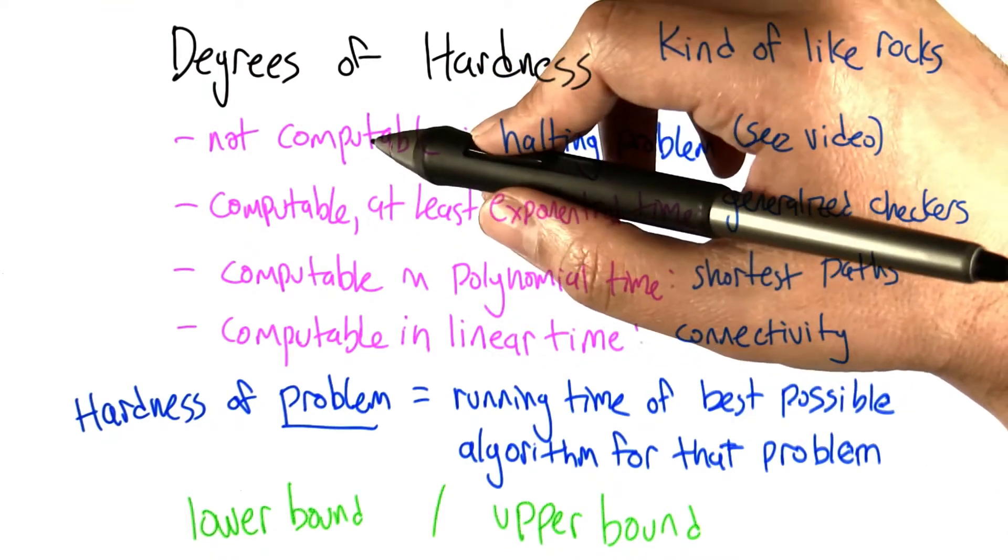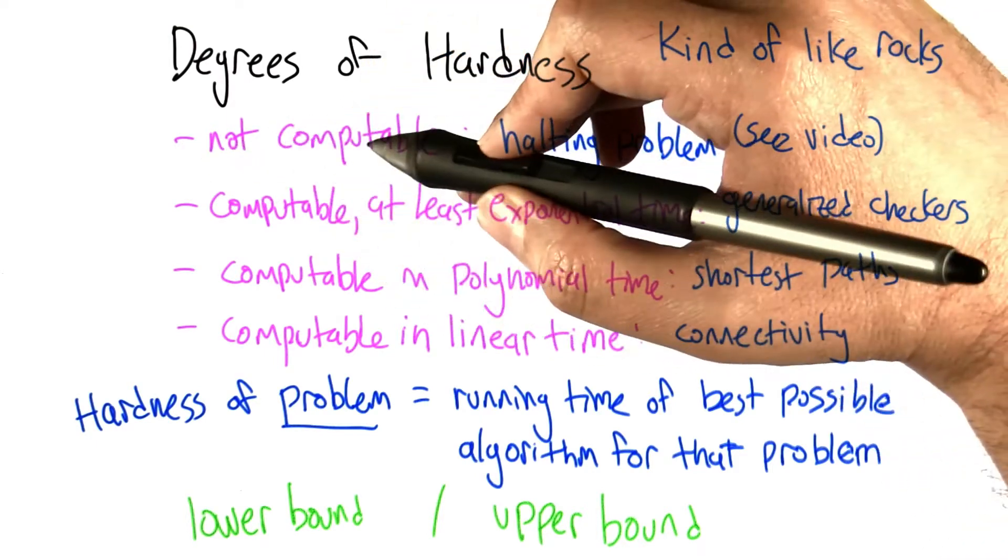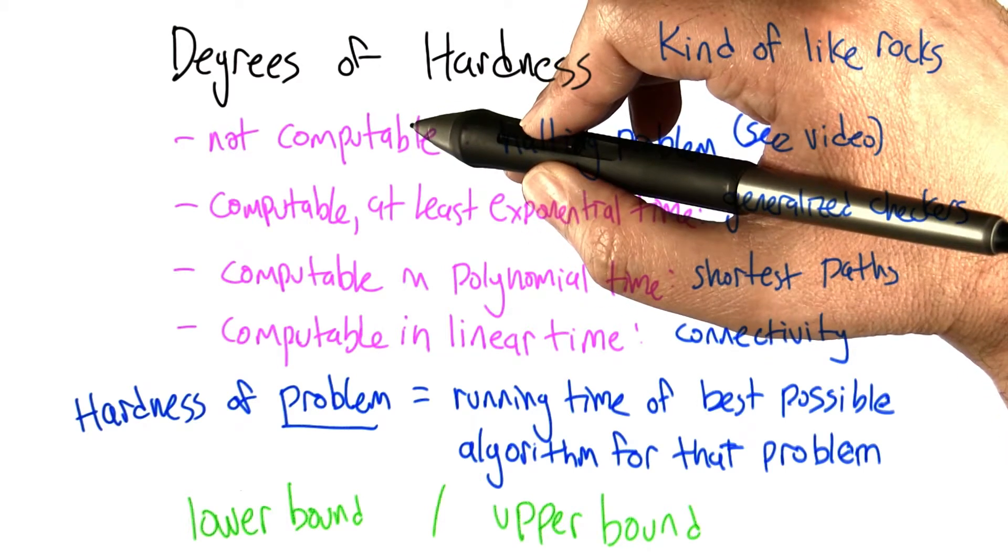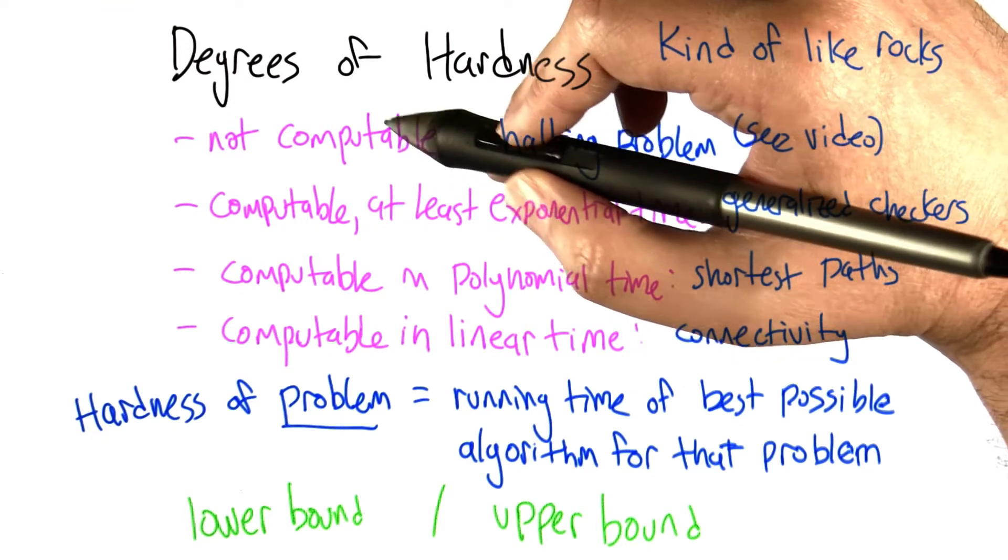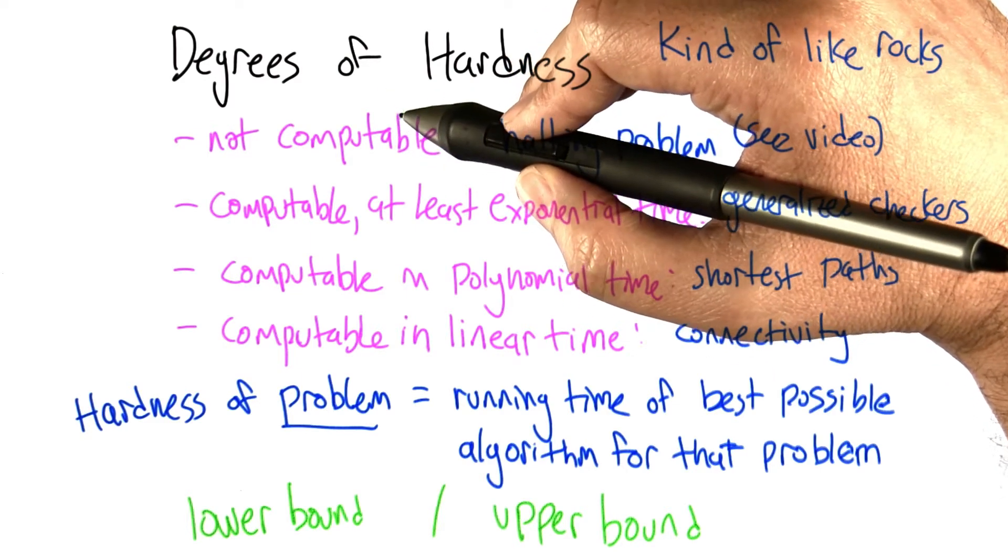Some of the entries on the scale include things like, well, some problems are actually not computable. We can define a problem and we can show that there is no computer program that can actually solve that problem. That's hard. In some sense, that's maybe as hard as you can imagine.